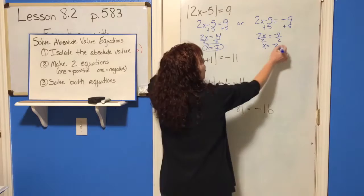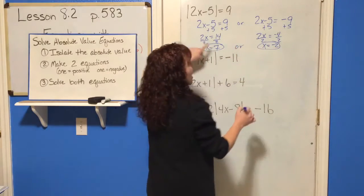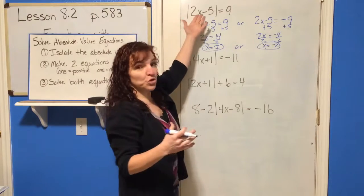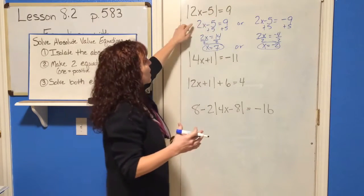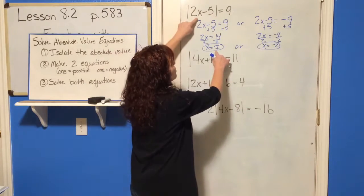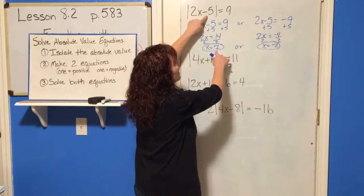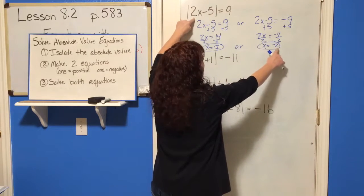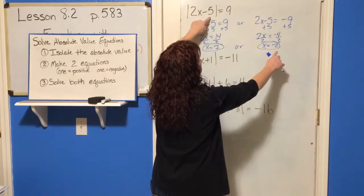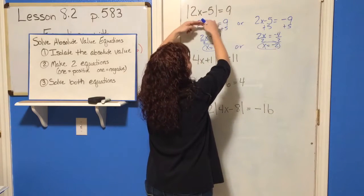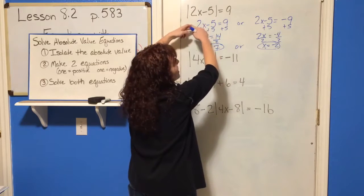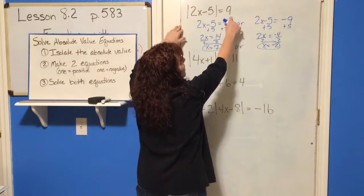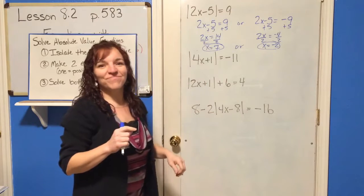So x equals 7 or x equals negative 2 — both of those will make this solution true. You can plug it in just to be sure: 7 times 2 is 14, 14 minus 5 is 9. And negative 2 times 2 is negative 4, negative 4 minus 5 is negative 9, and the absolute value of negative 9 is 9.